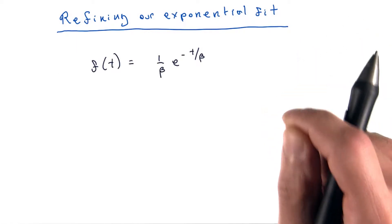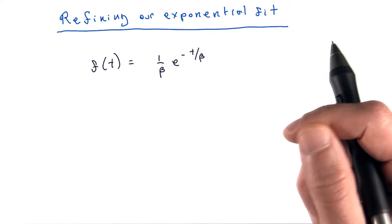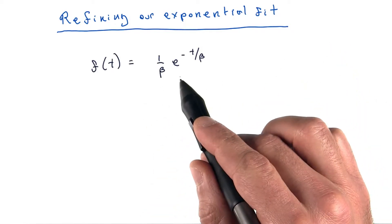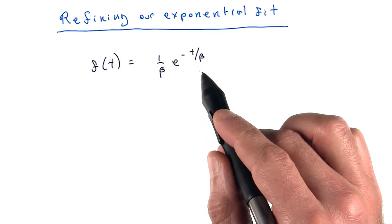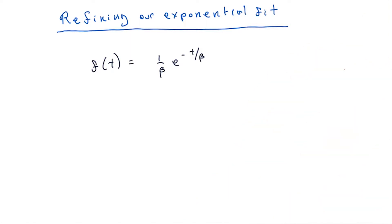Our initial guess of an exponential fit says that our initial guess for the PDF of intertweet times has this form: 1 over beta times e to the power of minus t over beta. And then we found the value of beta which is most likely to have produced the data that we saw.